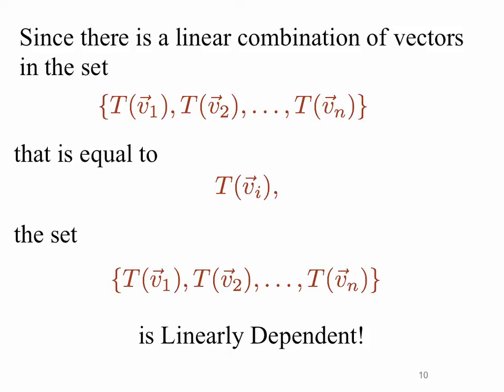So since there is a linear combination of vectors in the set, TV1, TV2, all up to TVN, that is equal to TVI, the set then is linearly dependent. It's the same reasoning we use for the N vectors, V1 to VN.